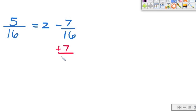Now let's try one that's a little different. How about we have something with some fractions? So we have 5 over 16 equals z minus 7 over 16. Our goal on this one is to get the variable by itself. So we're going to do the inverse operation of subtract 7 sixteenths. We're going to add 7 sixteenths to both sides because what you do to one side, you got to do to the other.